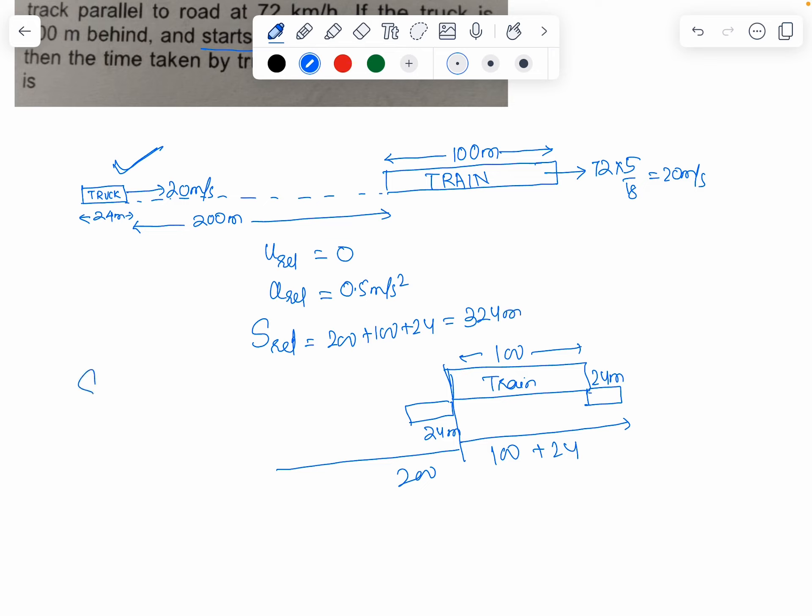We'll use the equation S relative equals U relative times t plus half A relative times t squared. With U relative zero, we get 324 equals half times 0.5 times t squared.